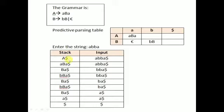They have also given the string a, b, b, a and they have ended this with dollar. You have to parse this using this particular predictive parsing table. In our program, we take two arrays: one is stack and another is input. The input a, b, b, a, dollar is already read. Initially we insert the starting variable A and a dollar onto the stack. The first symbol on the stack is capital A and the first symbol in the input is small a.